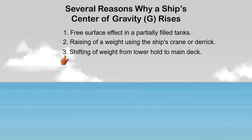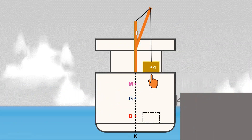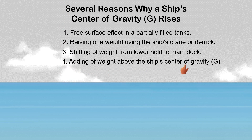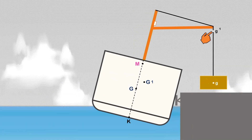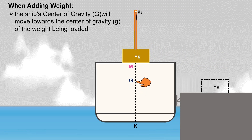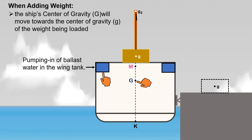Another reason for the rise of ship's G is the shifting of weight from the lower hold to the main deck. Raising a weight from below to any point above the ship's center of gravity will cause a rise in the ship's center of gravity. When shifting a weight, the ship's center of gravity always moves parallel to the movement of the center of gravity of the weight being shifted. Similarly, loading cargo at a point above the ship's G causes it to rise. This also includes pumping in ballast water in the wing tanks, as wing tanks are above ship's G. Always remember that when adding a weight, the ship's center of gravity will always move toward the center of gravity of the weight being loaded.